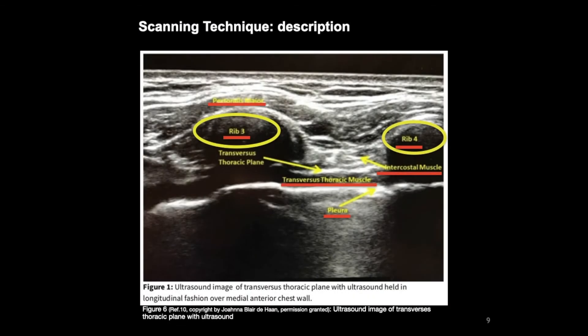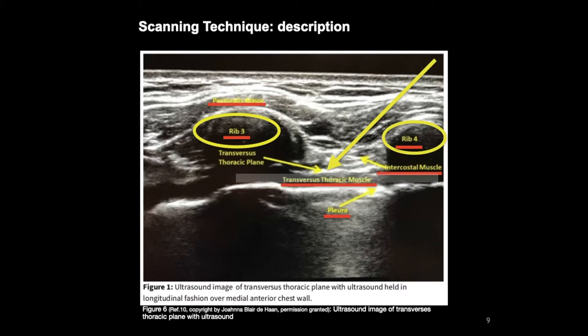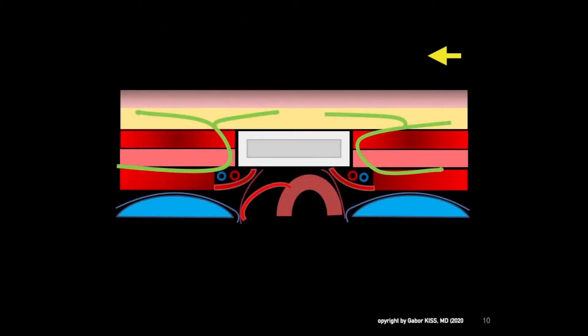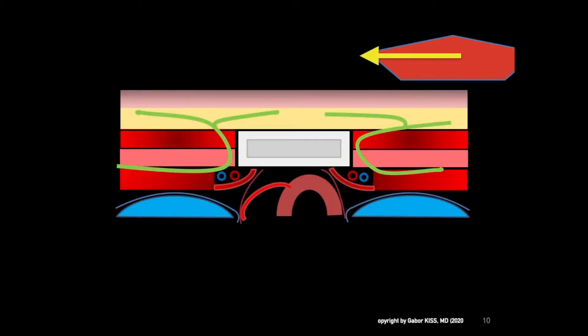The transversus thoracic muscle comes into view lateral to the sternum and deep to the internal intercostal muscle as a hypoechoic band. Then the internal thoracic artery is identified.